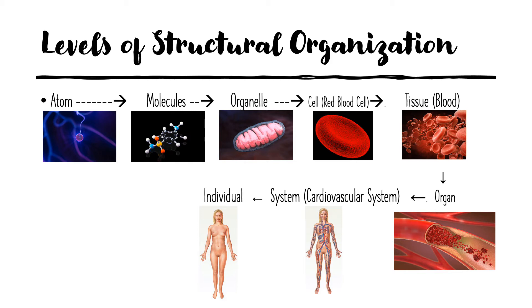All the organelles come together to form a cell — in this example, a red blood cell. When you have a whole bunch of cells come together, you get a tissue. Blood is a tissue — most people don't know this. When you have a whole bunch of blood together inside a blood vessel, that makes it an organ.